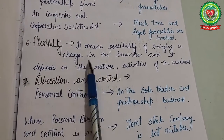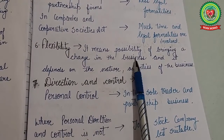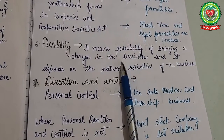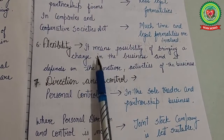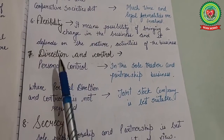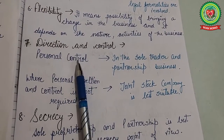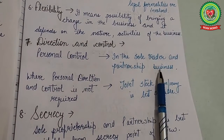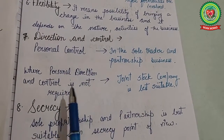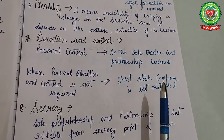The next factor is flexibility — the possibility of bringing change in the activities of the business. A good form of organization is one that allows changes according to the demand of customers. For direction and control, if a businessman wants personal control, then sole trader and partnership businesses are the best choice. Where personal direction and control is not required, a joint stock company is most suitable.